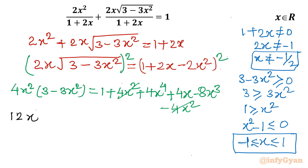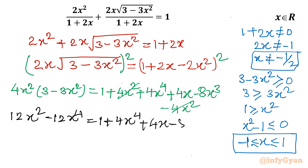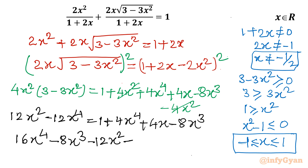Expanding the left-hand side gives 12x² − 12x⁴. So the full equation becomes 12x² − 12x⁴ = 1 + 4x⁴ + 4x − 8x³, which rearranges to 16x⁴ − 8x³ − 12x² + 4x + 1 = 0.